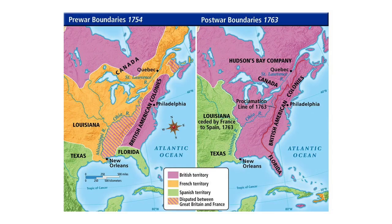The end of the French and Indian War in 1763 is the important part — it begins our trek toward independence. The French are essentially out of America. The British take all land east of the Mississippi, and the Spanish take all land west of the Mississippi from the French. The king also signs the Proclamation of 1763, prohibiting colonists from moving west of the Appalachian Mountains to stabilize relations with Native Americans. The colonists didn't listen, though you have to give the British some credit for trying to avoid conflict.